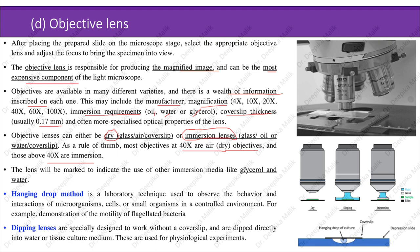The hanging drop method is a laboratory technique used to observe the behavior and interactions of microorganisms, cells, or small organisms in a controlled environment — for example, demonstrating the mobility of flagellated bacteria. Dipping lenses are specially designed to work without a cover slip and are dipped directly into water or tissue culture medium; these are used for physiological experiments.